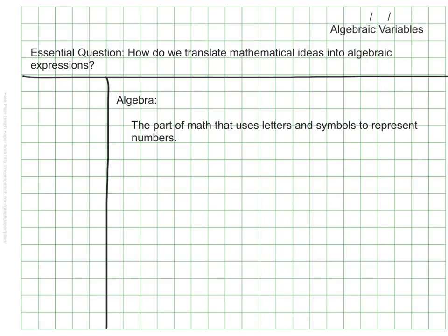The letters that we use to represent the numbers change based on the situation. We call these letters variables. A variable changes its value based on the situation. I can remember the term variable because it changes or varies based on the problem. The letter I use can also change so that it best matches the situation.